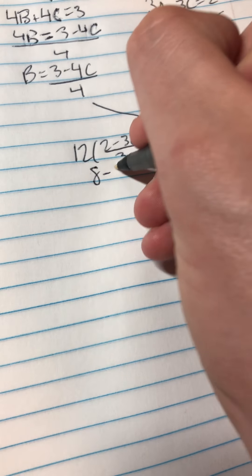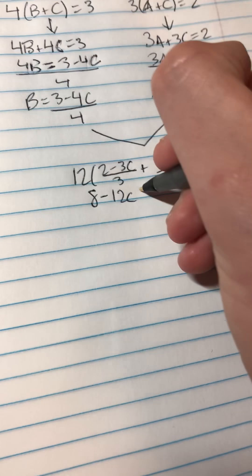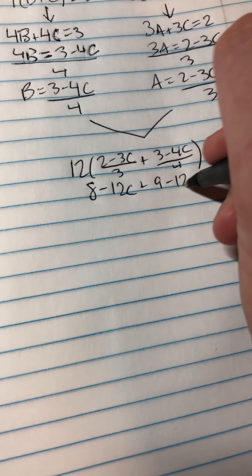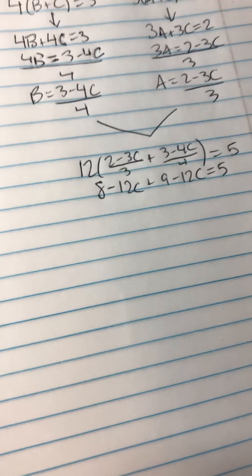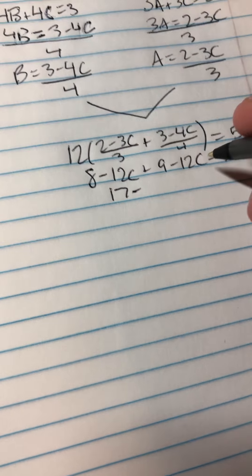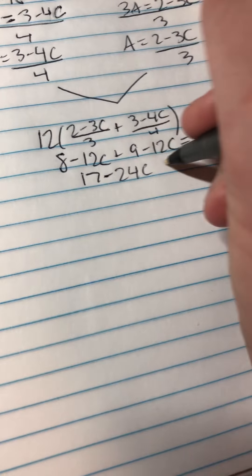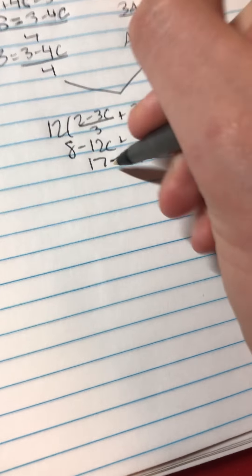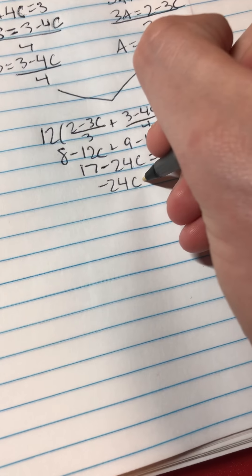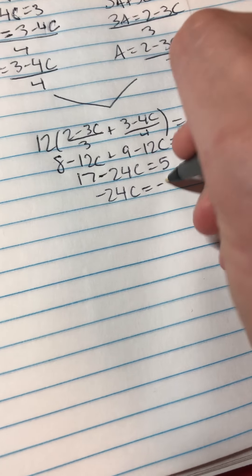So I'm going to solve this out. You'd get 8 minus 12C plus 9 minus 12C equals 5. So you'd get 17, add the 8 and 9, and add the negative 12 to negative 12, we get negative 24C equals 5. Subtract the 17 from both sides, so you're going to end up getting negative 24C equals negative 12.